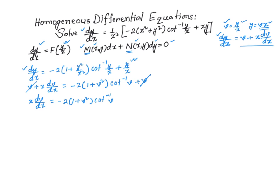Rearranging the terms, I get dv divided by [negative (1 + v²) times cotangent inverse of v] equals 2·dx/x. This is now a separable equation that I can integrate on both sides.